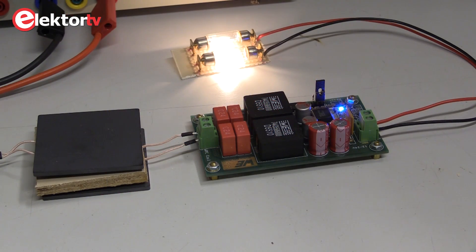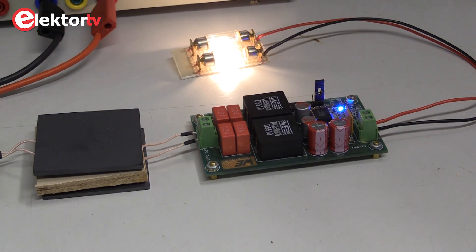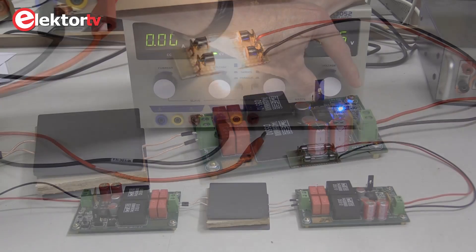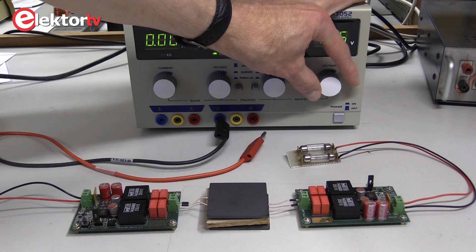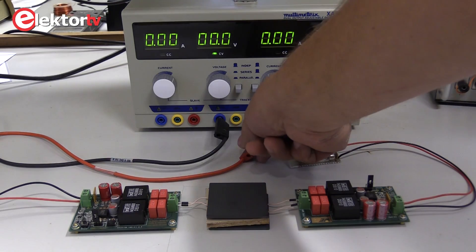To demonstrate the wireless power transmission we connected two light bulbs of 12 volt and 10 watts in series to the receiver output. The input voltage is 19.5 volts, the standard output voltage of a regular notebook adapter.